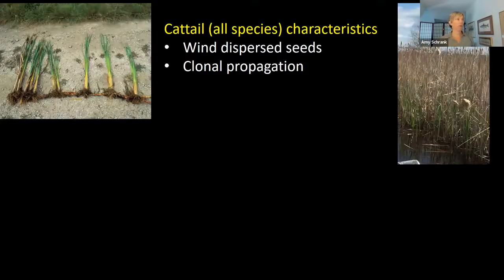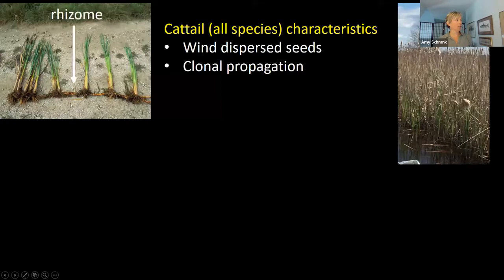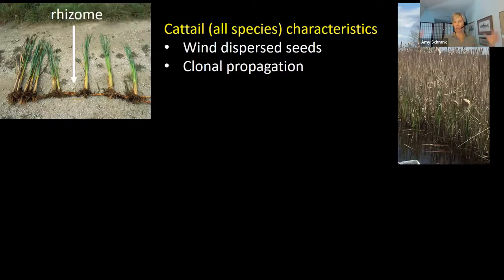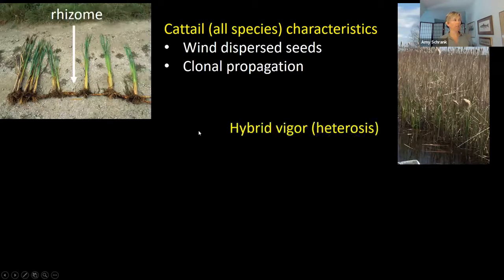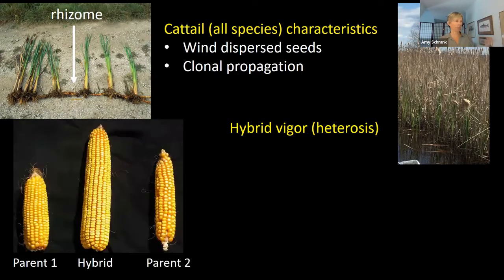All cattail species have two methods of reproduction: wind-dispersed seeds and clonal reproduction through rhizomes that shoot underground, allowing them to take over large areas. The reason hybrid cattail takes over so many areas is hybrid vigor, or heterosis — the idea that offspring of two parent species do better. Just like in corn, the hybrid of these two species grows larger, and this seems to be true of hybrid cattail as well, giving it a really rapid growth rate.